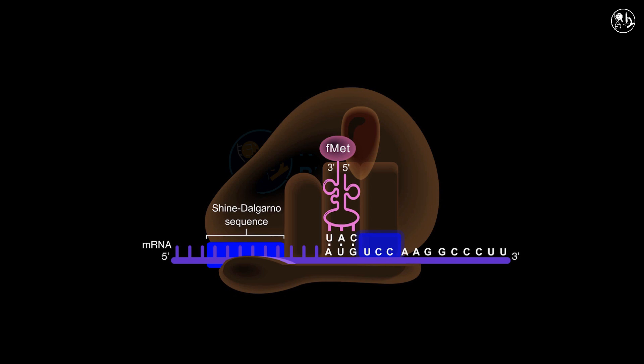The codon present is UCC, which signifies the amino acid serine. In the cytoplasm, the tRNA carrying serine forms a complex with EF-Tu and GTP. The resulting aminoacyl-tRNA EF-Tu GTP complex makes its way into the A site, where the tRNA's anticodon establishes hydrogen bonds with the UCC codon. When the binding occurs, GTP undergoes hydrolysis, leading to the release and recycling of the EF-Tu.